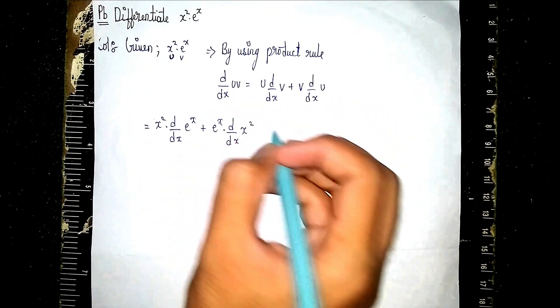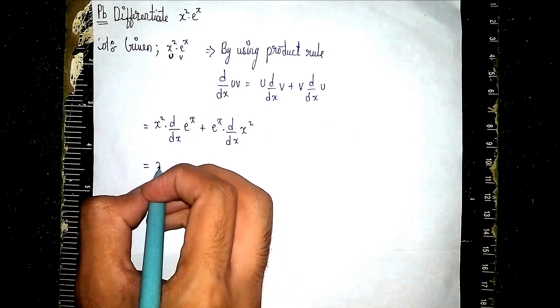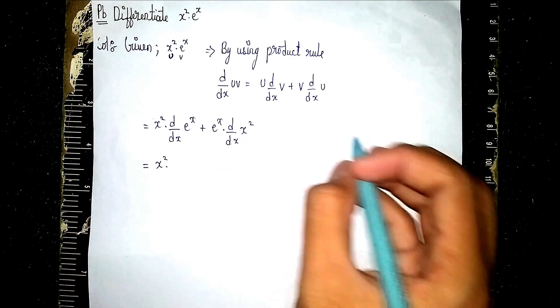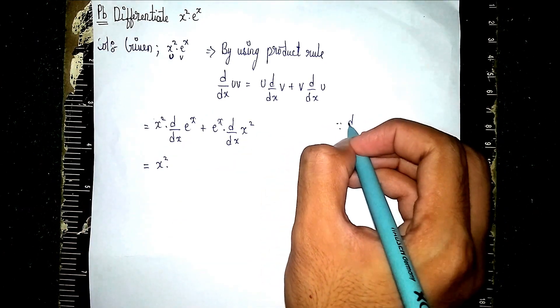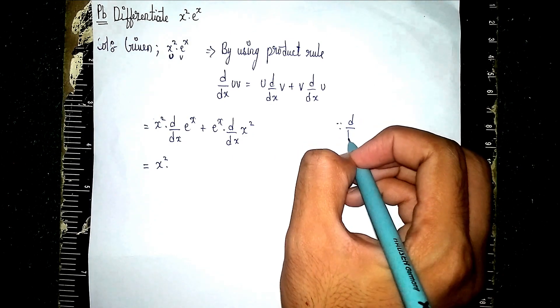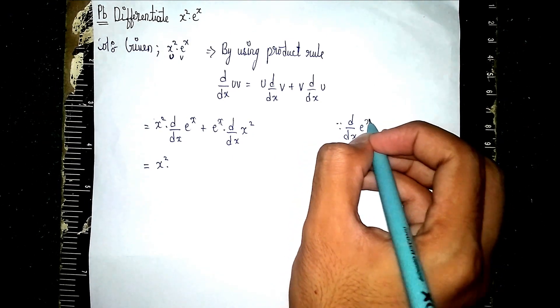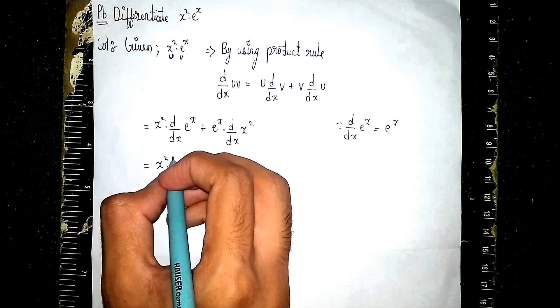Now, x² times... Here I'm differentiating. d/dx of e^x is the same, e^x only. So it will become e^x.